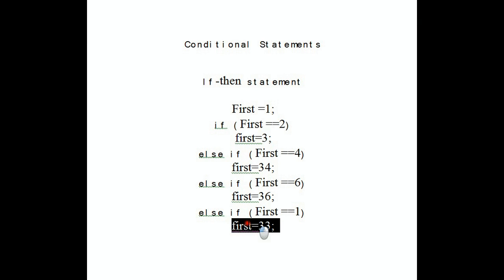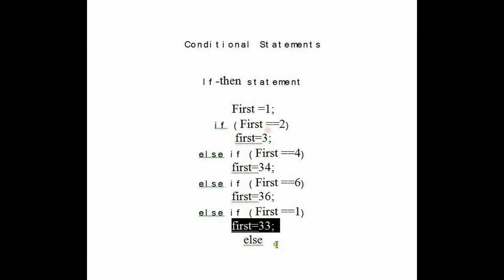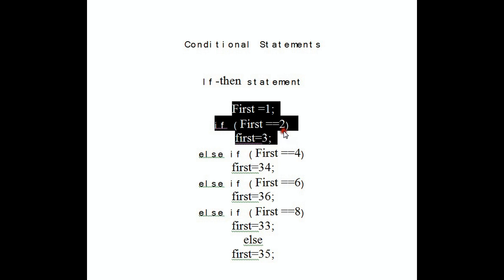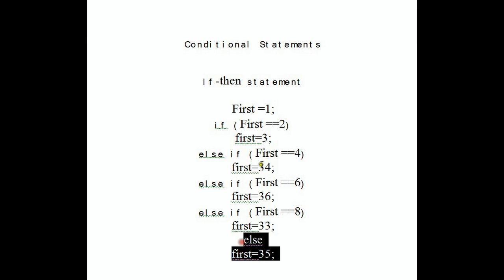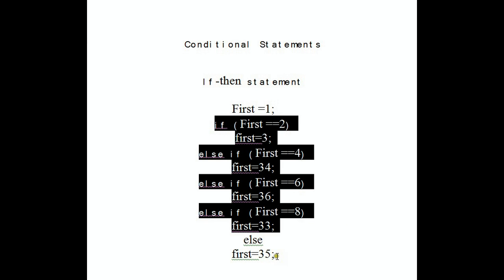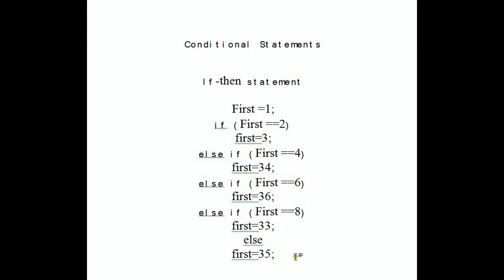However, the next condition checks if the value of 'first' is equal to one — that's true, so it gets executed. The if-then-else statement is basically the same thing but with an else part added. The purpose of the else part is that if none of the above conditions are true, it goes there and executes that statement — for example, changing the value of 'first' to 35.